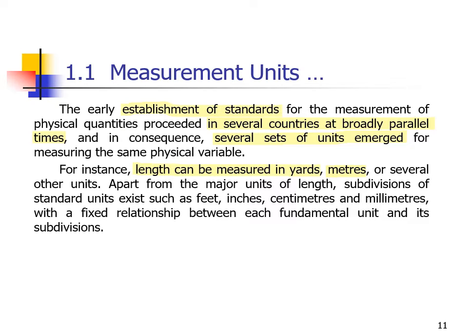There are multiple units used for measuring the same physical variables. For example, force can be measured in Newtons or Pounds, and mass in grams or kilograms. Because the Industrial Revolution occurred in parallel across different countries, different systems developed simultaneously. Countries used different units such as yards and meters for length. Apart from the major units of length, subdivisions of standard units exist — such as feet, inches, centimeters, and millimeters — with fixed relationships between each fundamental unit and its subdivisions.